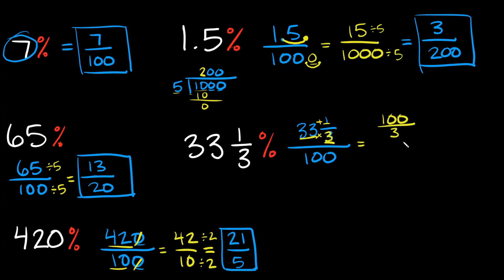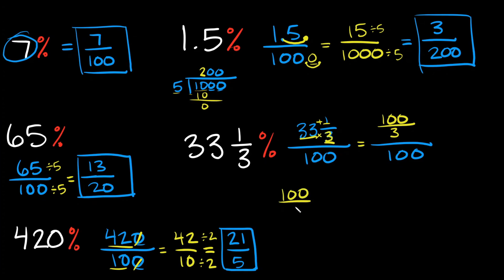Now we put 100 over 3 over 100. This still needs a little work — we now have a fraction divided by a whole number. The first thing you want to do is rewrite this with a division symbol, so we have 100 over 3 divided by 100.